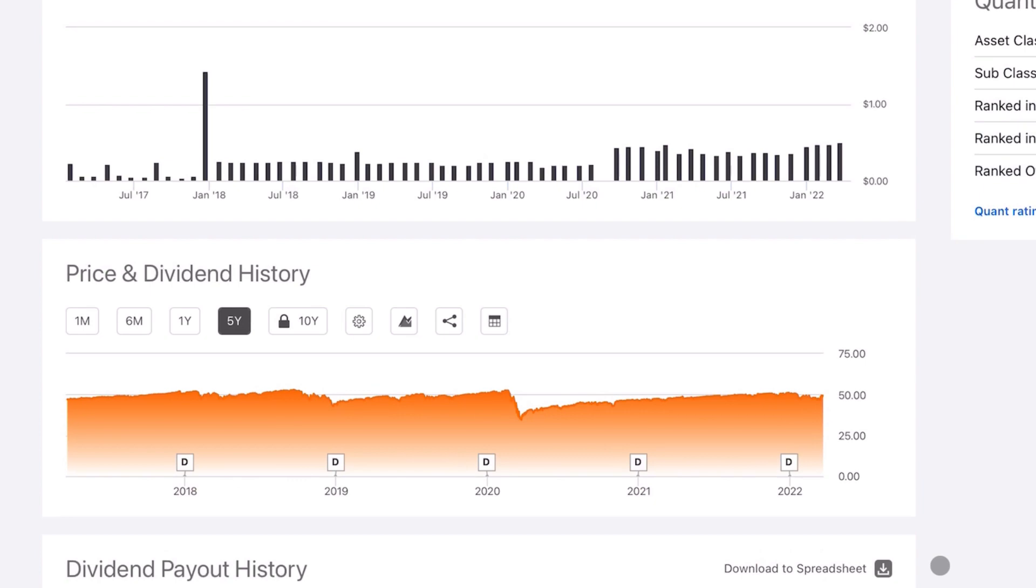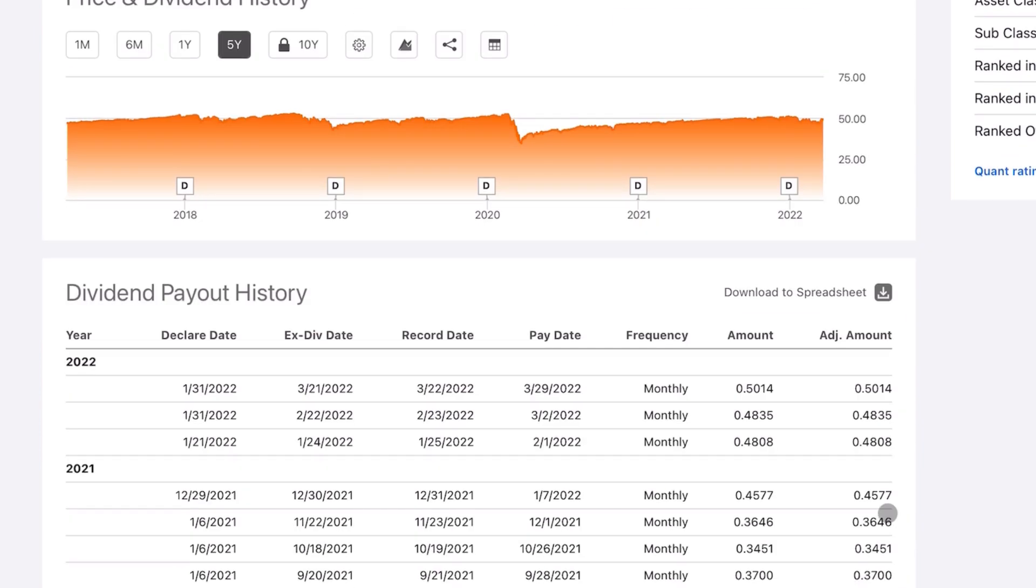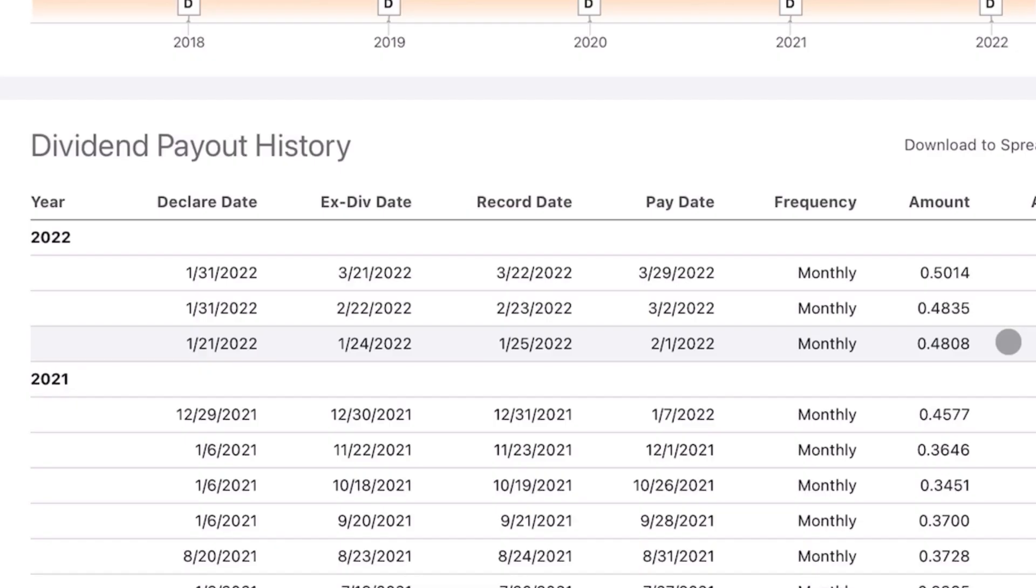And on top of that, if you take a look at the actual monthly dividends, not only have they not been suspended during this volatility, but they're actually the highest ever. They just announced the dividend for the month of March, and it's 50 cents per share.